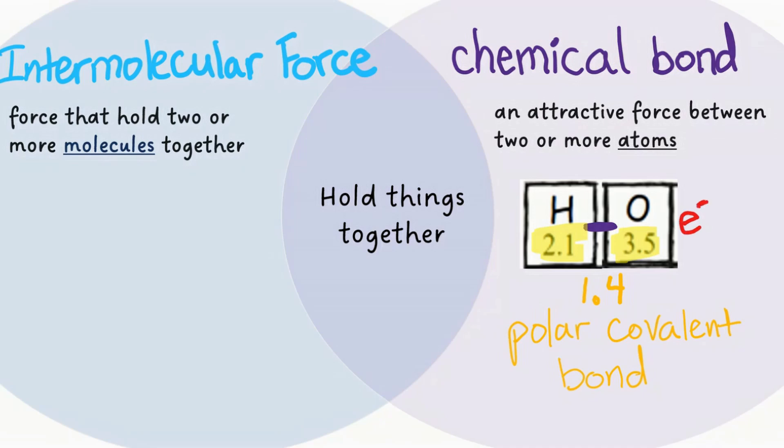Remember electrons are negatively charged, so if the oxygen atom is pulling more electrons towards itself that means it'll be partially negatively charged, more so than the hydrogen atom. Meaning hydrogen here has a comparatively positive charge.